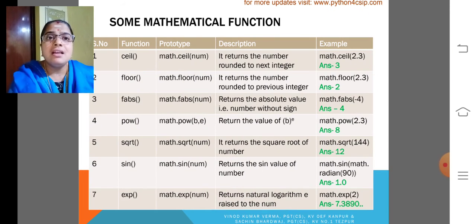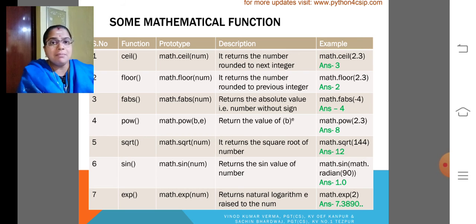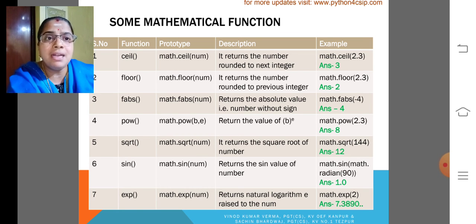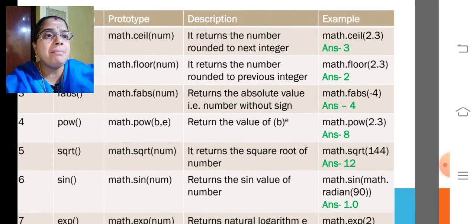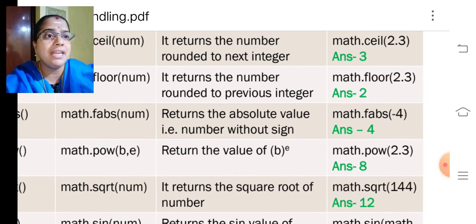So, some of the functions I had included is ceil, floor, fabs, power. Power is nothing but, ceil is nothing but round to next integer. If you are giving, look at the example, math.ceil 2.3, it will give 3. That is the next integer.